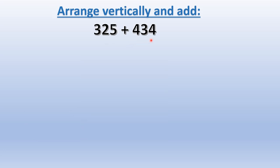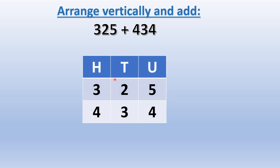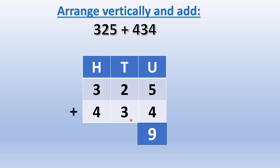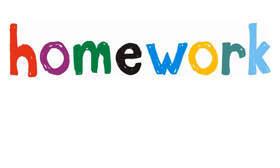325 plus 434. We write the place values: hundreds, tens, and units. For 325, we write 3 in the hundreds column, 2 in the tens column, 5 in the units column. For 434, we write 4 in the hundreds column, 3 in the tens column, 4 in the units column. We write the addition sign. 5 units plus 4 units give us 9 units. 2 tens plus 3 tens give us 5 tens. 3 hundreds plus 4 hundreds give us 7 hundreds. So 325 plus 434 is equal to 759.